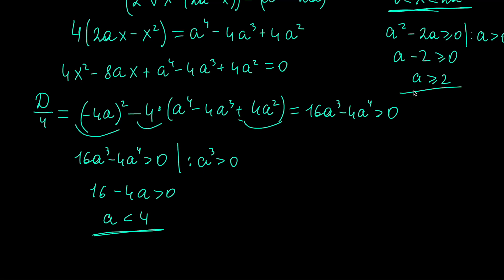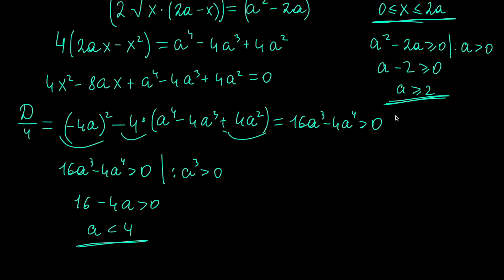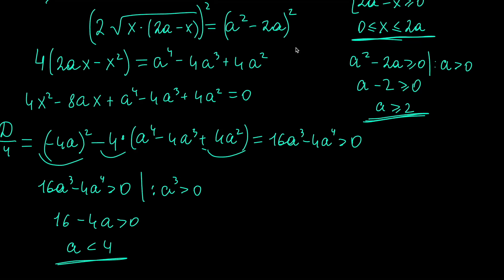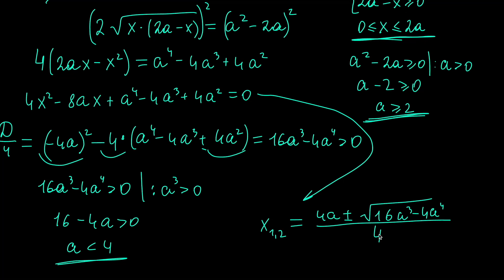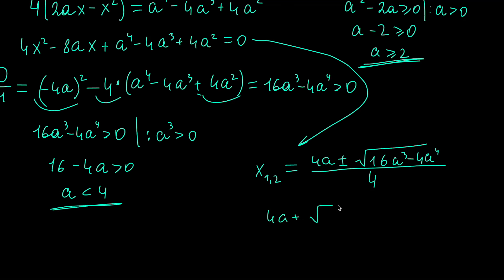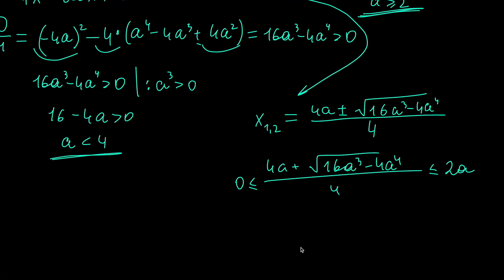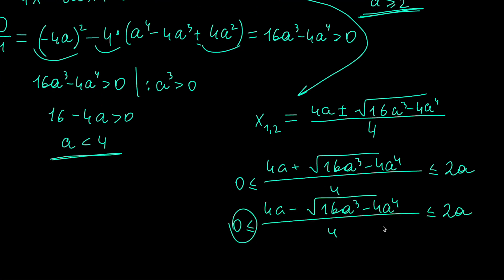So far we have A < 4 and A ≥ 2, but we also have restrictions on the variable x that we must remember. The roots x₁ and x₂ must satisfy the domain restrictions. Each root should be between 0 and 2A, giving a system of double inequalities — in total four inequalities. This doesn't look appealing, so let's do something smarter.